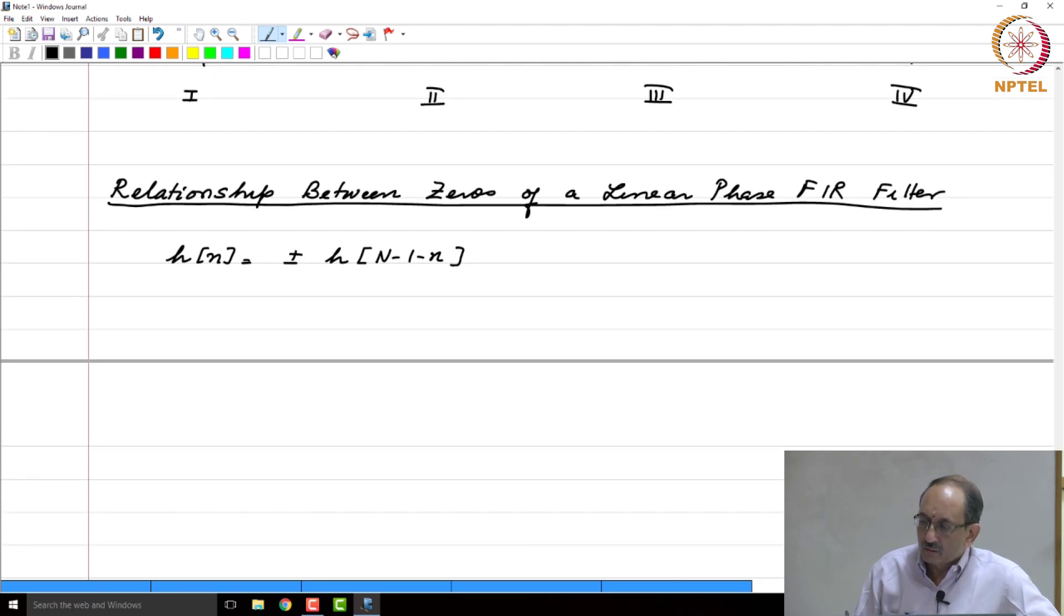And this was actually one of the earlier tutorial problems where you were asked to relate the Z-transform of these two sequences, just to quickly recall. If H(n) where H(N-1+n), then H(z) is in this particular case all you are doing is you have shifted it by N-1 samples to the left. If you consider H(n), then H(N-1+n) is nothing but Z to the N-1 times H(z).